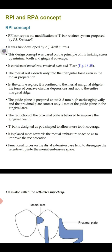RPI and RPA concept is actually the modification of the I-bar system. In both RPI and RPA concept there are three components: R means mesial rest, P means proximal plate, and in RPI, I means I-bar; but in RPA, A means Acres clasp or circumferential clasp, while in RPI, I means bar clasp or gingivally approaching clasp.